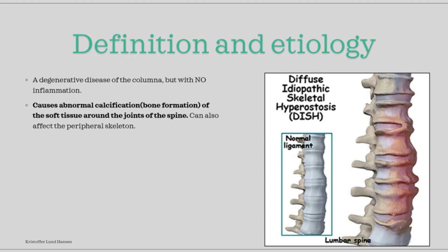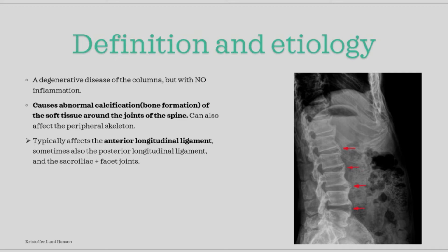The typical DISH affects the anterior longitudinal ligament, but also quite often the posterior longitudinal ligament. Other possibly affected joints are the sacroiliac and the facet joints. An important thing to know to separate DISH from Bechterev's is that DISH is not associated with HLA-B27, while Bechterev's is highly associated. DISH is also quite commonly seen in diabetes patients, but there is no connection between diabetes and Bechterev's.